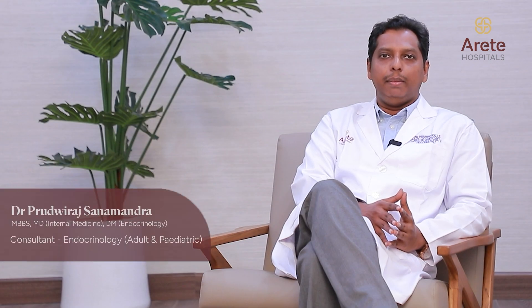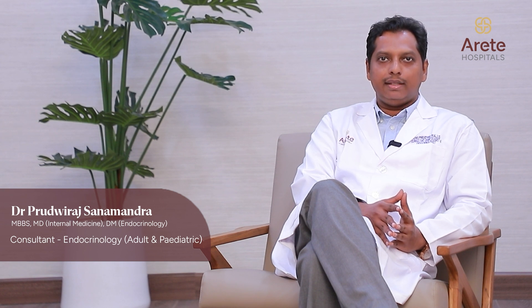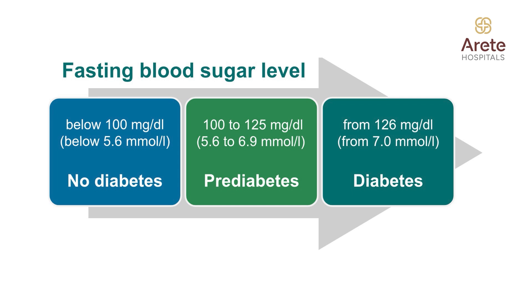Diabetes is a hyperglycemia condition — that is, excessive blood sugar. So how much sugar is considered excessive? If fasting blood sugar is more than 126 mg per deciliter, we can label the patient as diabetic.